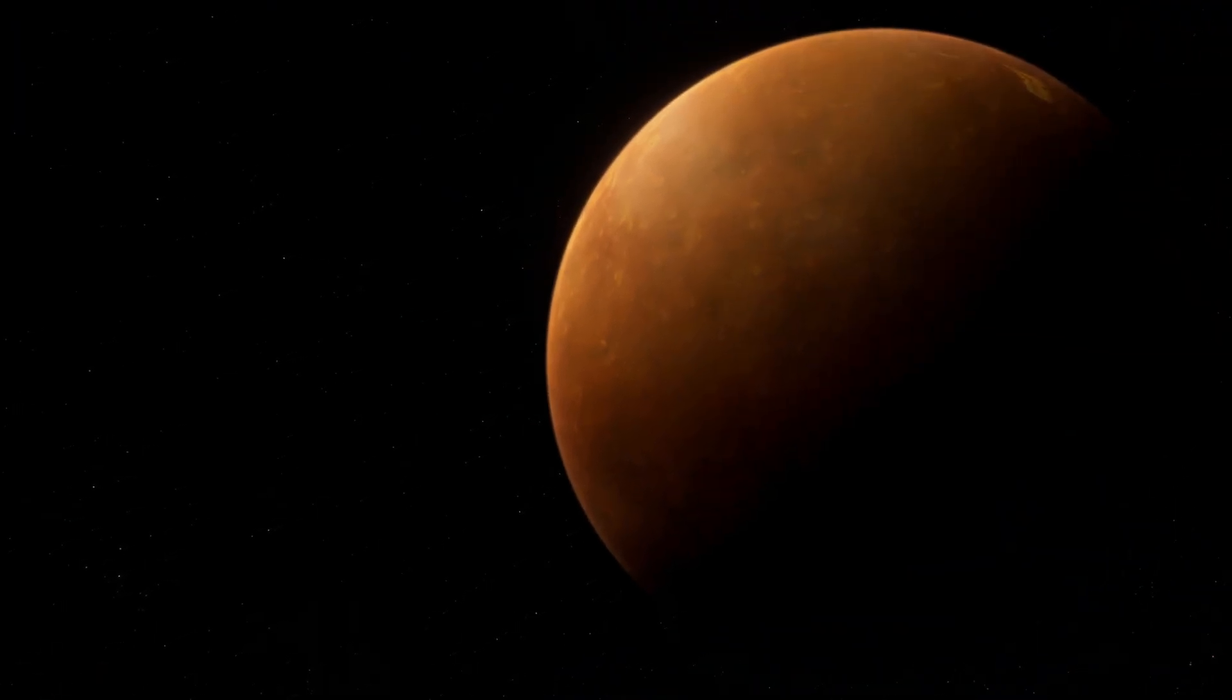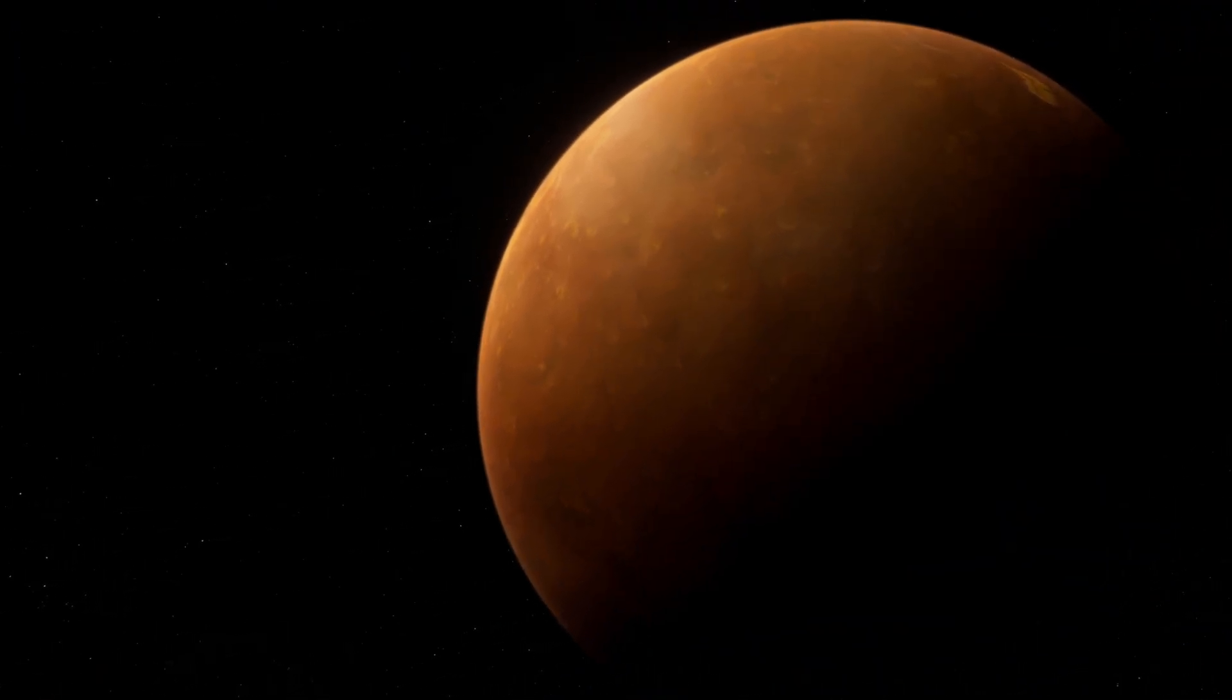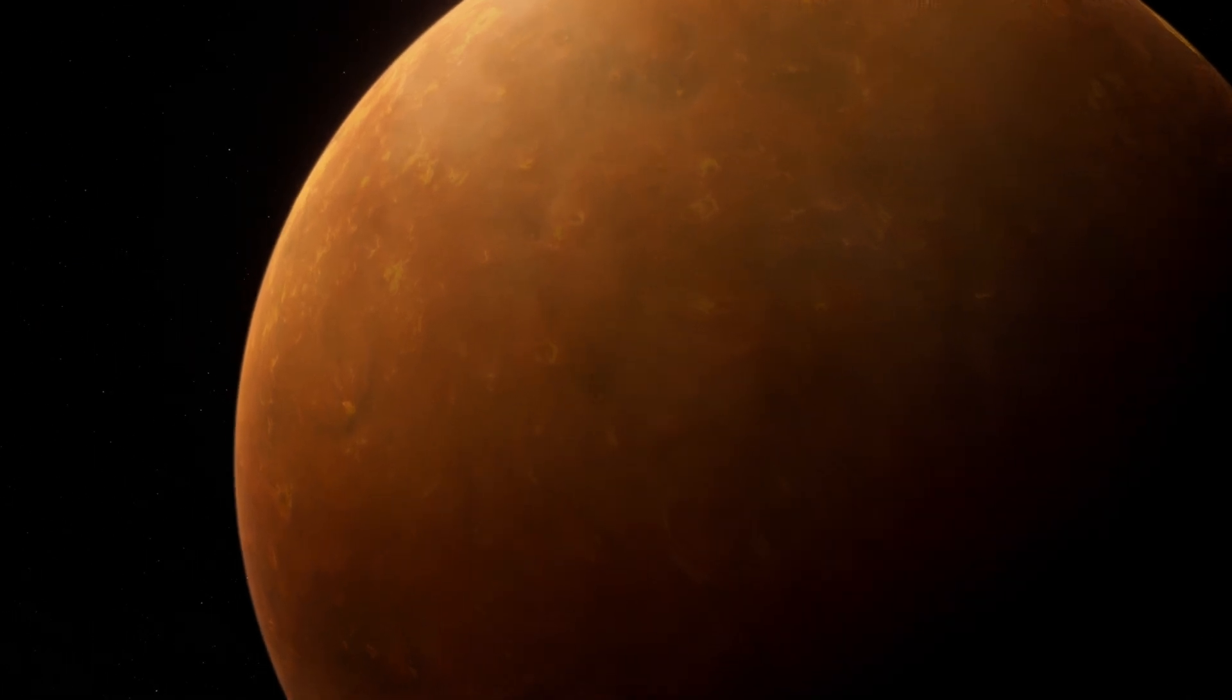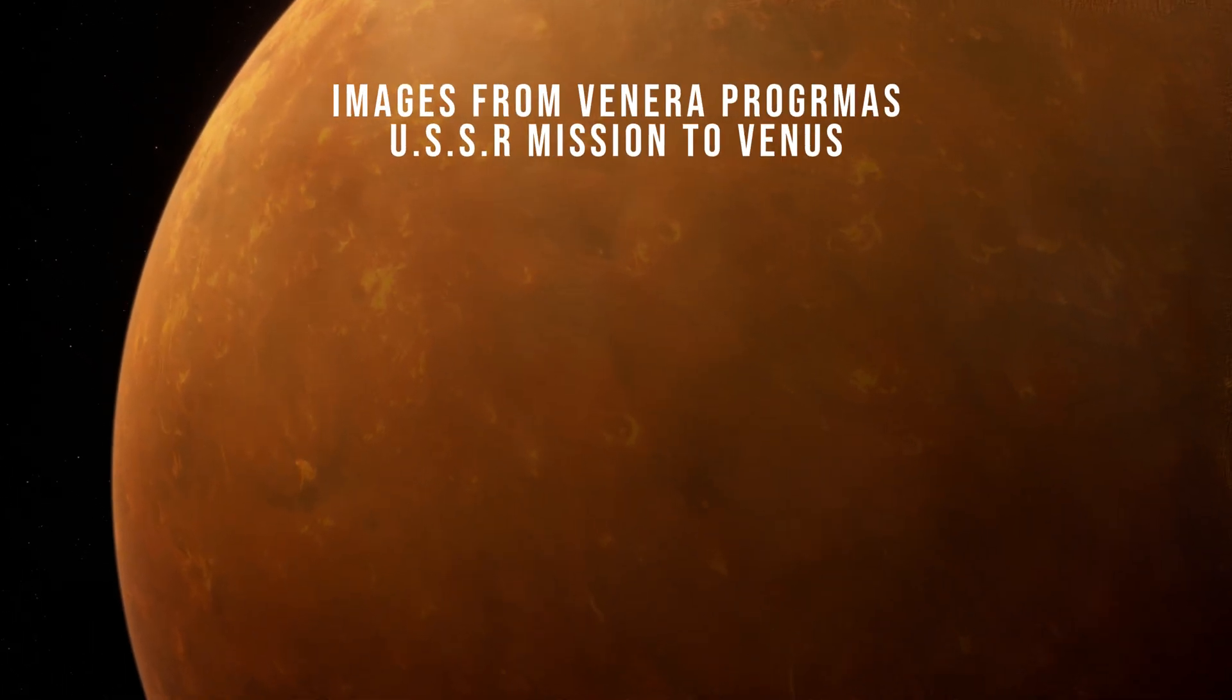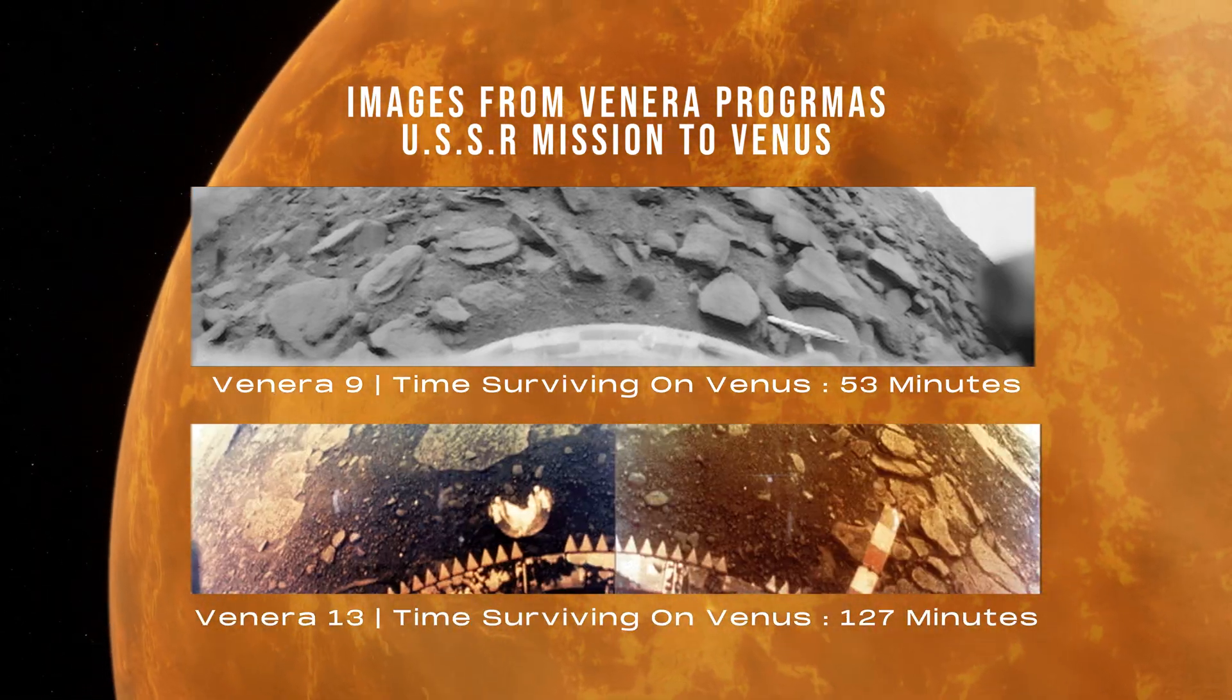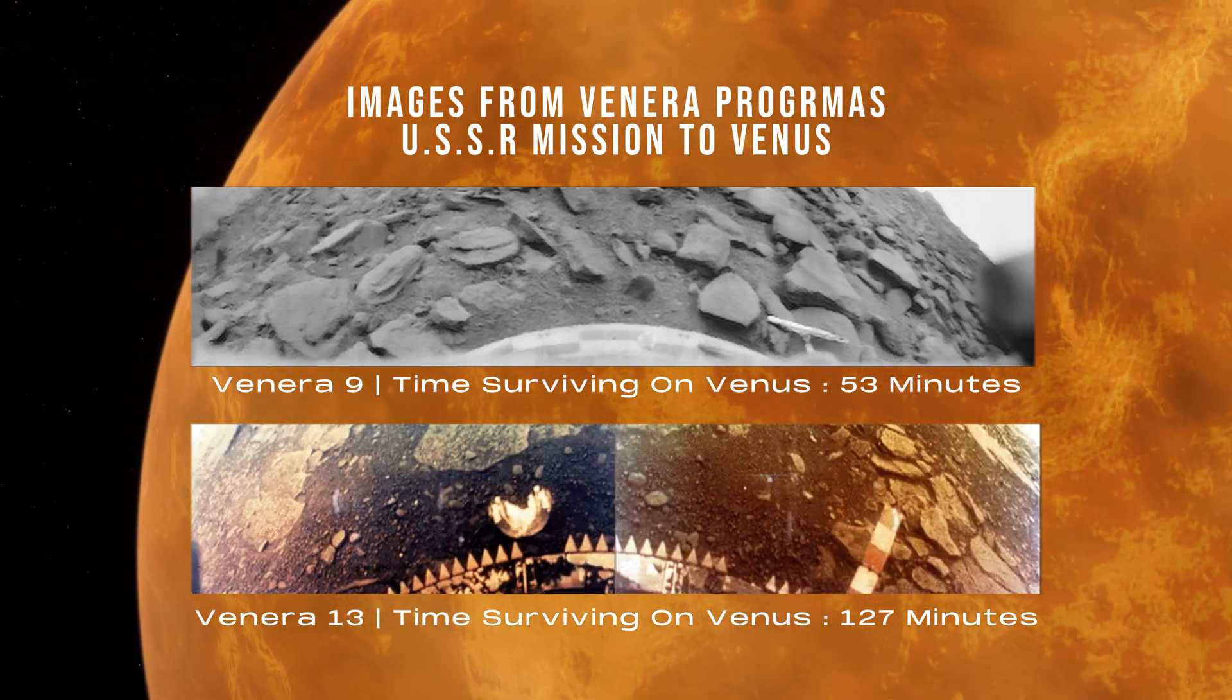This incredible planet has been a target since the early days of space exploration. The Soviet Union's Venera program was the first to send probes to Venus, with Venera 7 being the first spacecraft to successfully land and transmit data back to Earth in 1970.